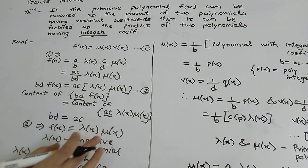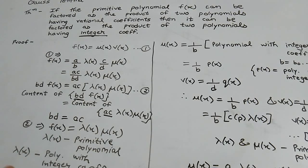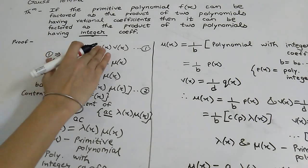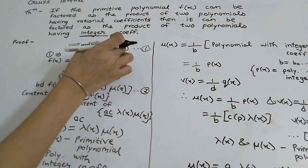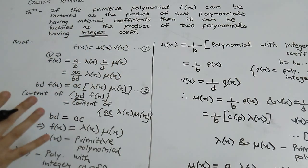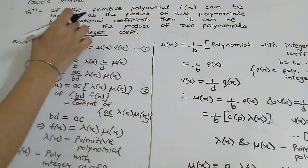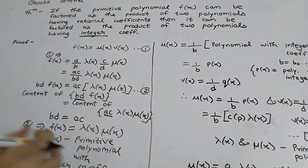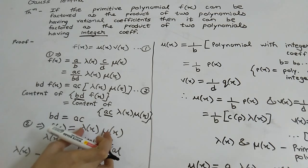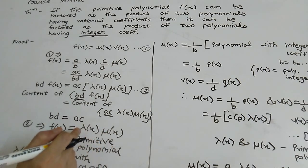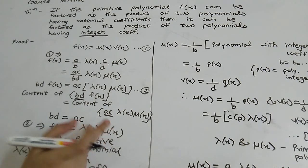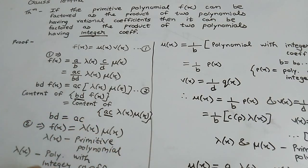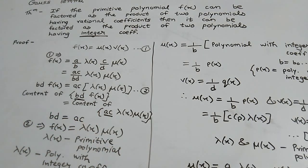And μ(x) is also a polynomial with integer coefficients. So we have proved what was required: f(x) has been written as the product of two polynomials having integer coefficients, where λ(x) and μ(x) are polynomials having integer coefficients. So friends, if you like my video then please don't forget to subscribe to my channel. Thank you.